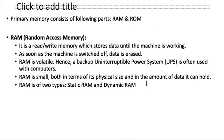RAM — Random Access Memory — is a read/write memory. It stores data only while the machine is working. It is not permanent memory: as soon as the machine is switched off, data is erased. RAM is a volatile memory.